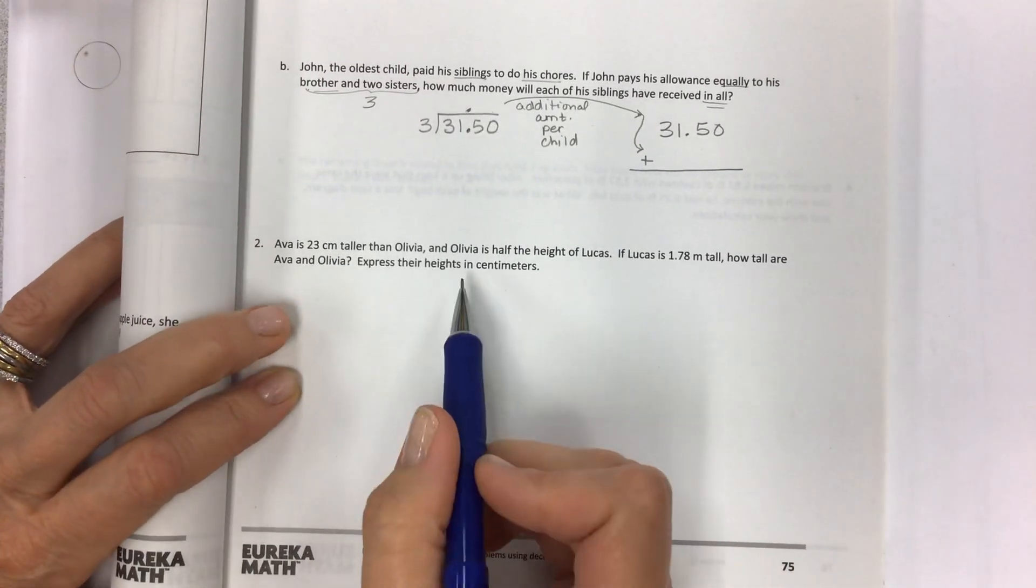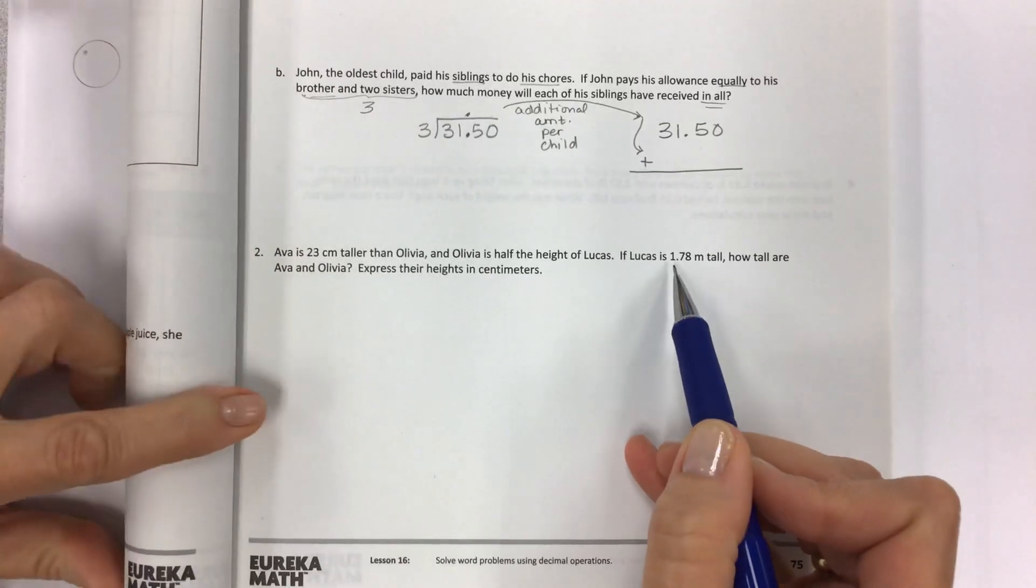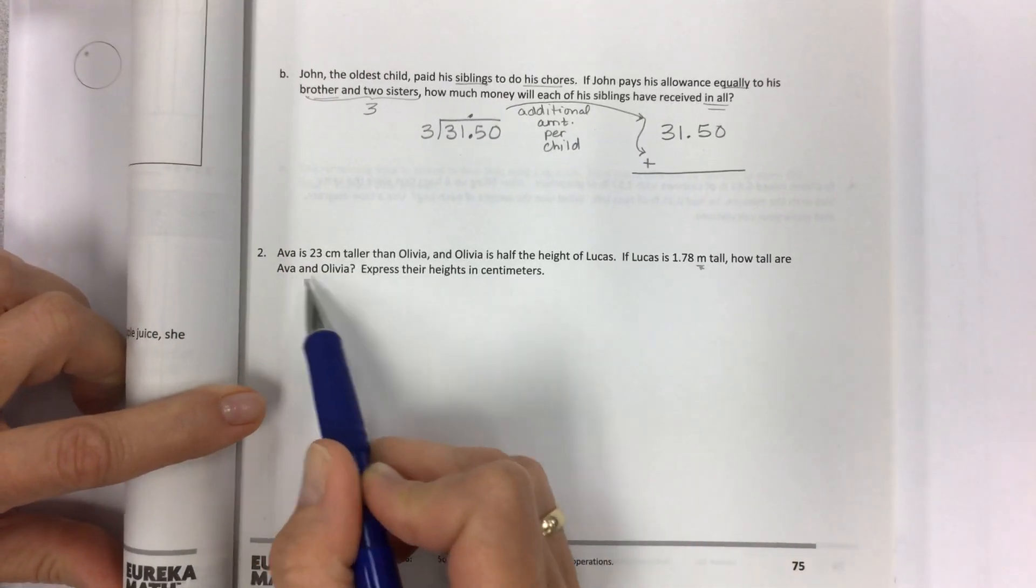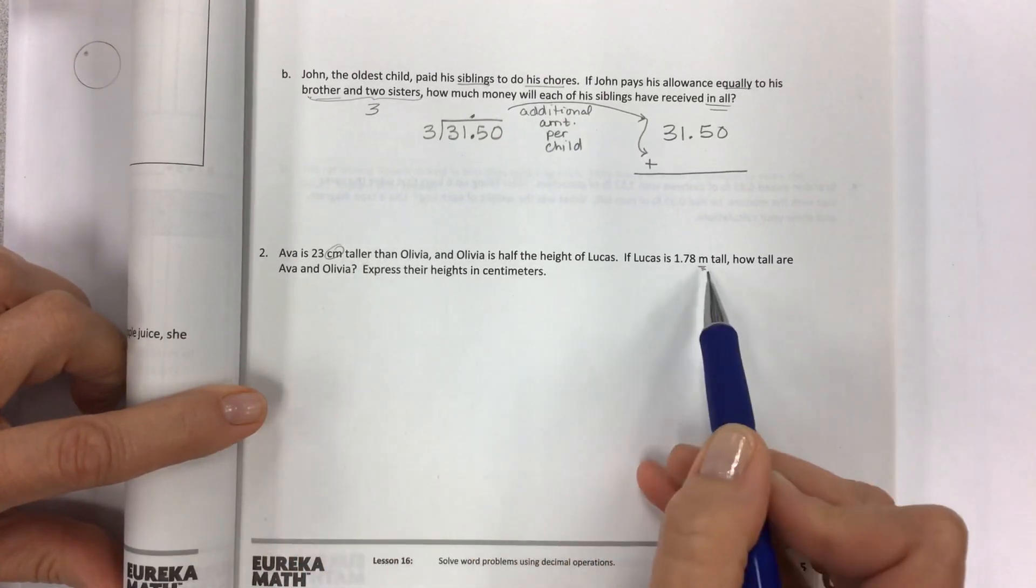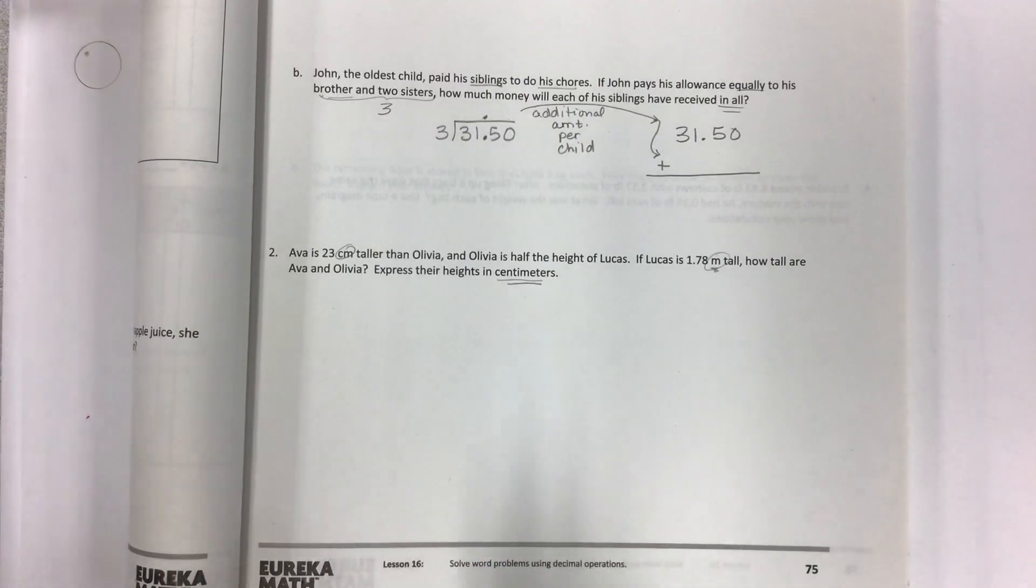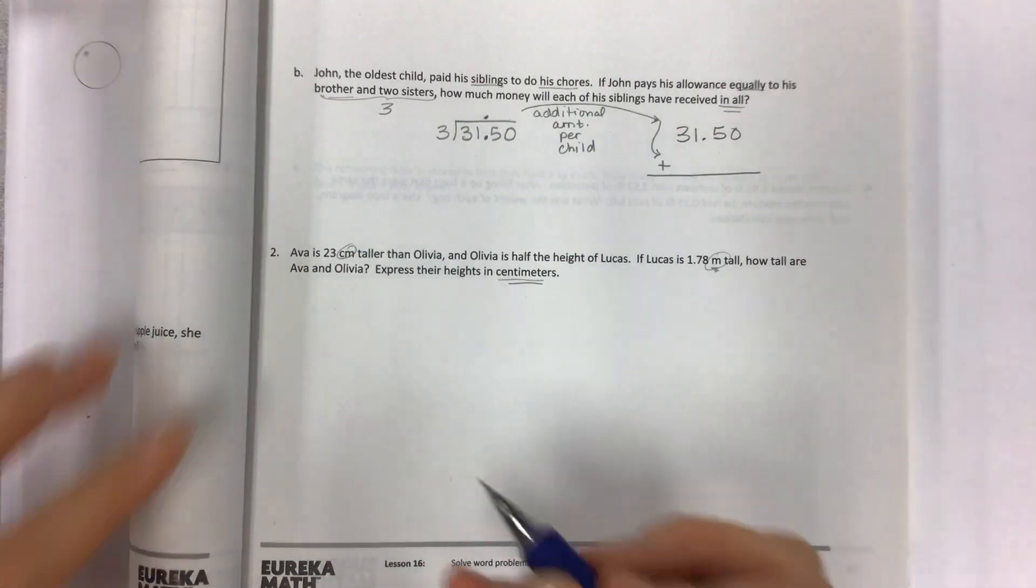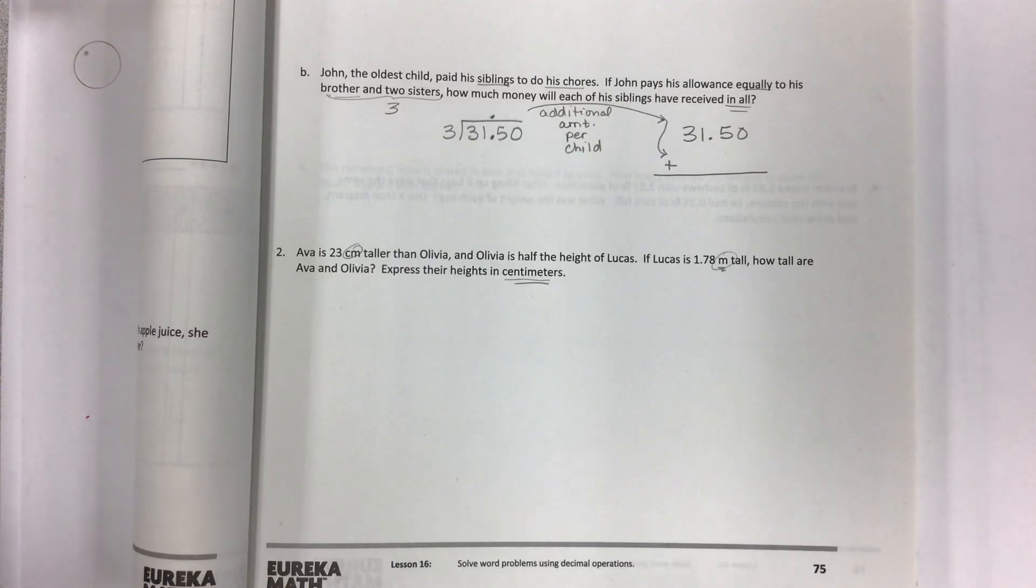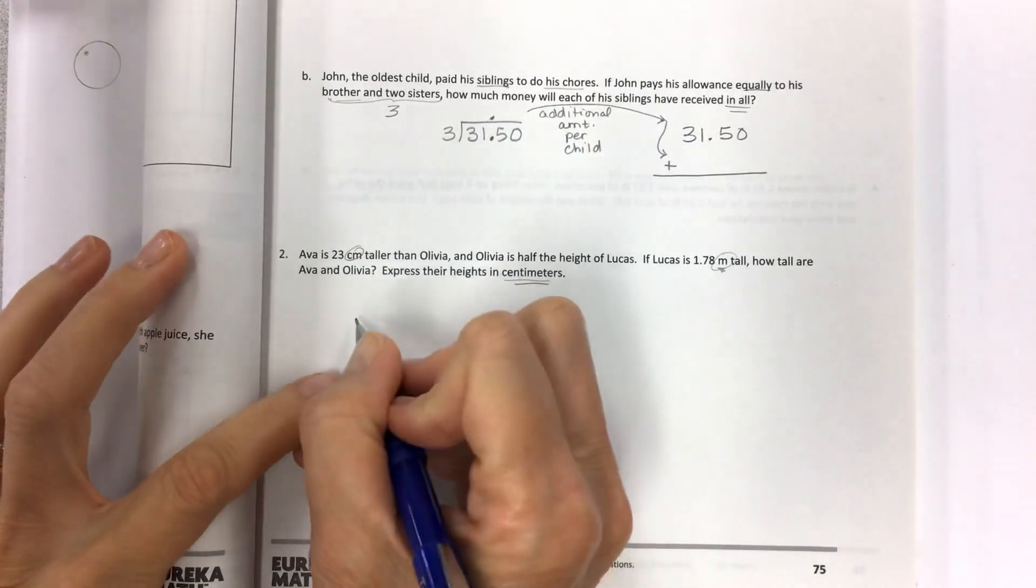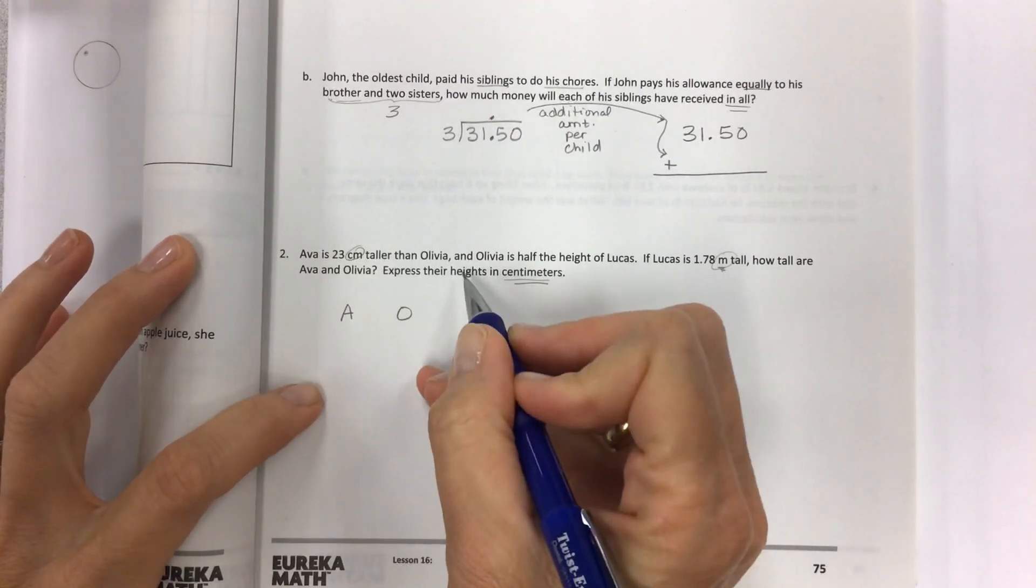All right, we have some comparative questions. Ava is 23 centimeters taller than Olivia, and Olivia is half the height of Lucas. If Lucas is 1.78 meters tall, how tall are Ava and Olivia? Look at the amounts here - we've got centimeters and meters, that's like red flag. Express their heights in centimeters. So we're going to work with just the same measurement all the way through. Let's make a couple of tape diagrams and since we're talking about height, let's turn our tape diagrams so that they're vertical.